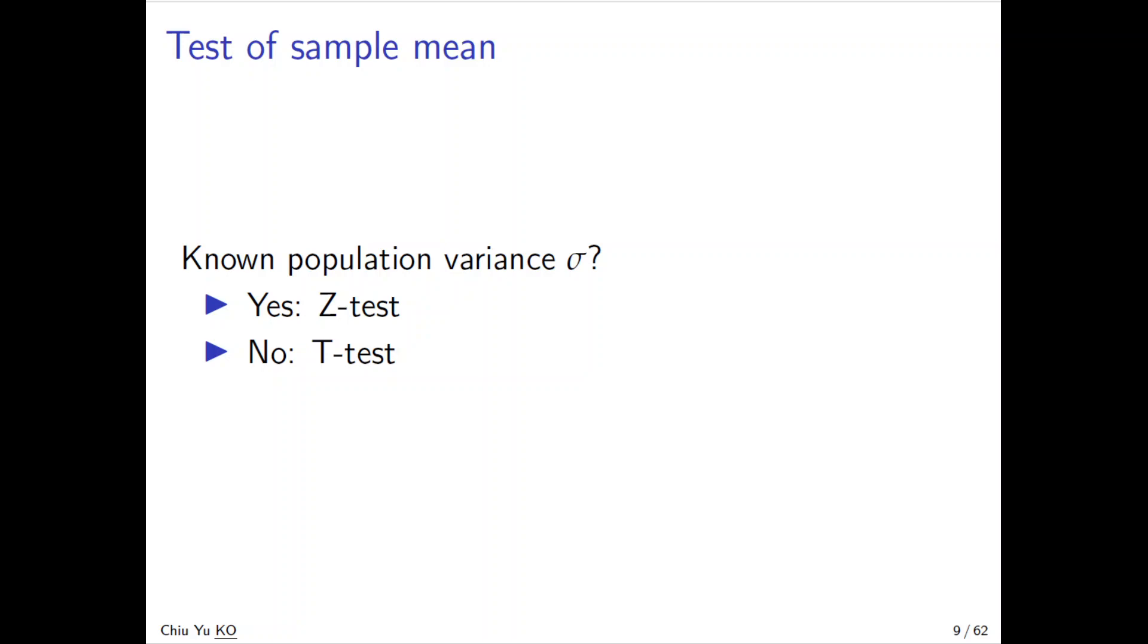The first thing we want to test is a one-sample population mean. We want to see whether what we collect from the data using the sample mean is consistent with what we have said. There are two different test statistics you can construct based on whether we know the population variance σ². If you know it, it's a Z-test; if you don't know it, it's a T-test.